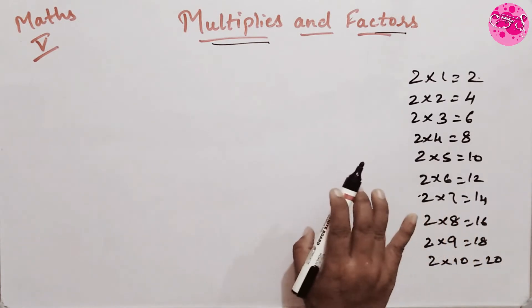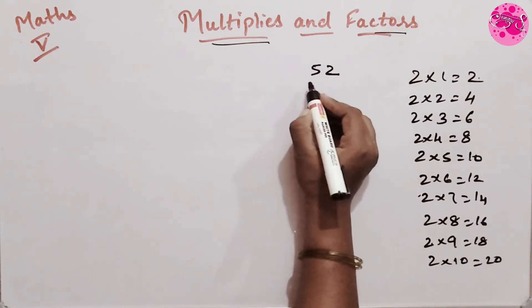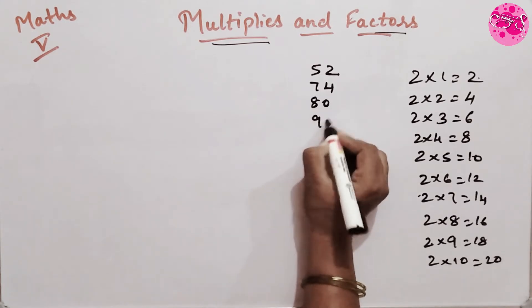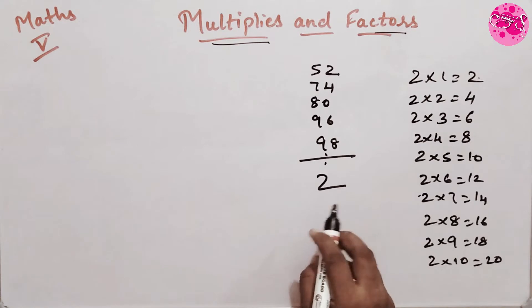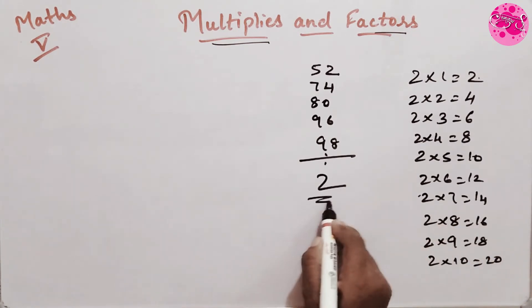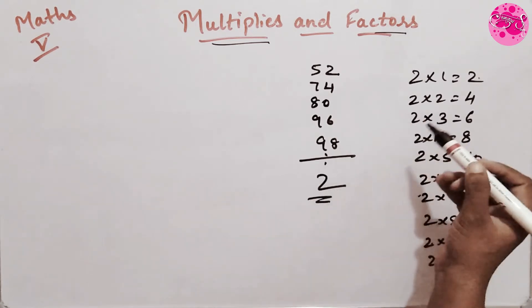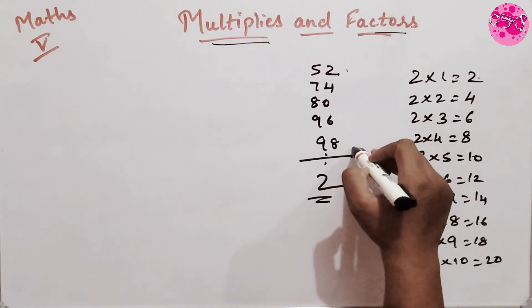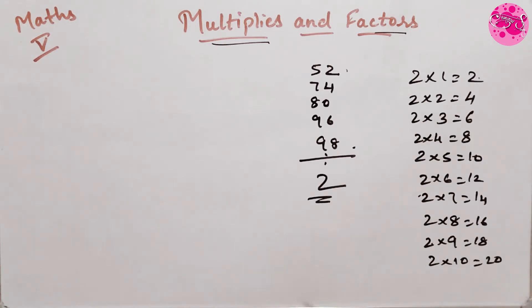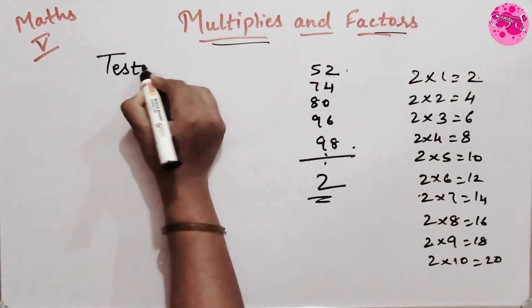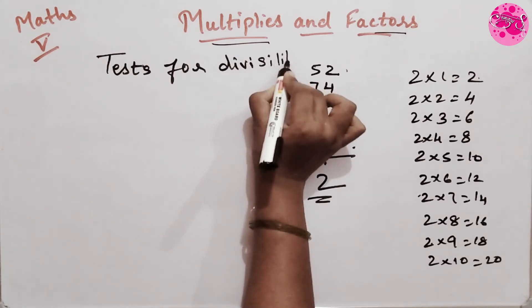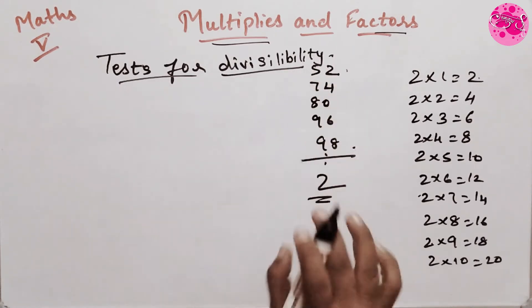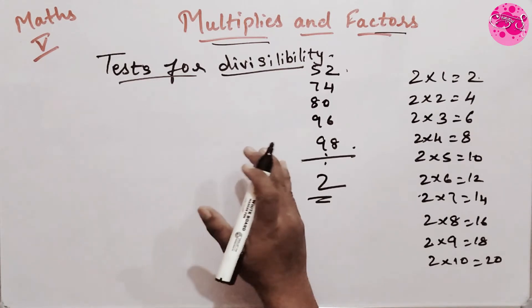Similarly, when we divide 52, 74, 80, 96 and 98 by 2 to see if they are exactly divisible by 2 or not — to find out whether these numbers are divisible by 2, there is a method called the test for divisibility.